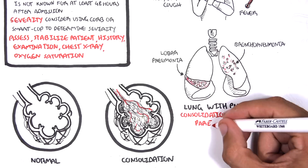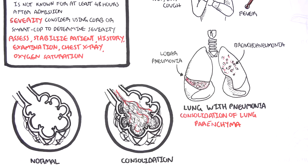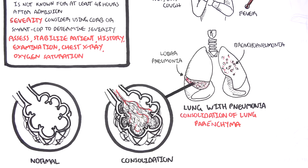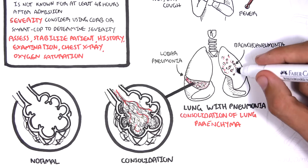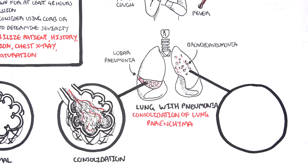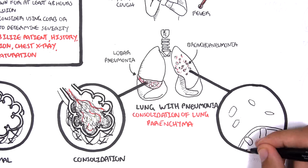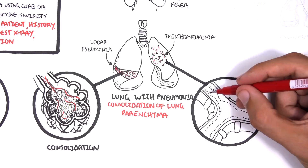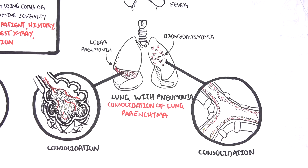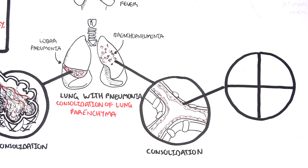In pneumonia, we get consolidation of the lung parenchyma. In bronchopneumonia, similar things are happening except the site of consolidation is mainly along the airways — the bronchioles — and this can later move towards the alveoli, eventually leading to lobar pneumonia.